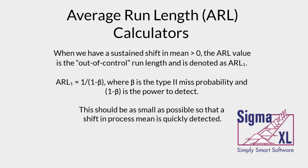When we have a sustained shift in mean greater than zero, the ARL value is the out-of-control run length and is denoted as ARL one. ARL one is equal to 1 over 1 minus beta, where beta is the type 2 missed probability and 1 minus beta is the power to detect. This should be as small as possible so that a shift in process mean is quickly detected.